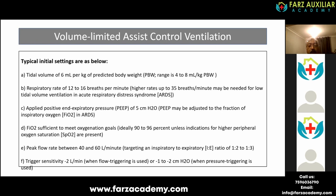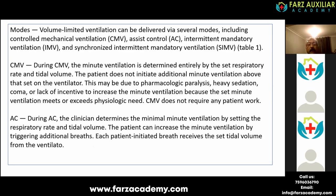Peak flow rate varies from 40 to 60 liters per minute. Depending on the peak flow rate you can adjust your I:E ratio. The objective is to keep I:E ratio between 1:2 or 1:3. But when ventilating a COPD patient, you might have to increase the peak flow rate to keep the I:E ratio at the lower side — 1:4 sometimes. Trigger sensitivity can be of two types. Flow triggering is normally kept at minus 2 liters per minute and pressure triggering at minus 1 to 2 centimeters of water.